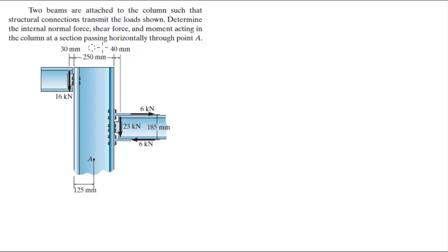A section passing horizontally means a section more or less like that. This problem gets a little bit confusing because they don't tell you at what distance A is from this beam right here.